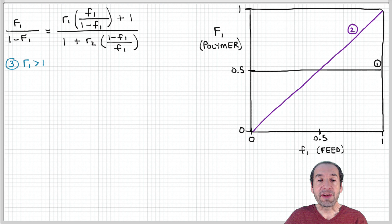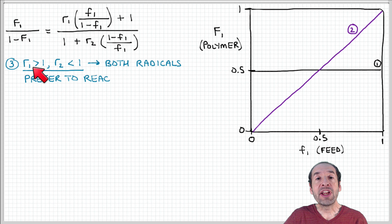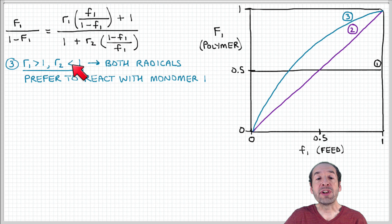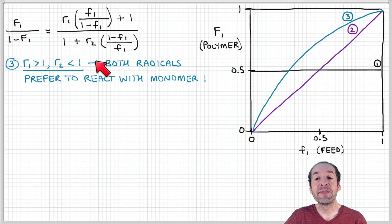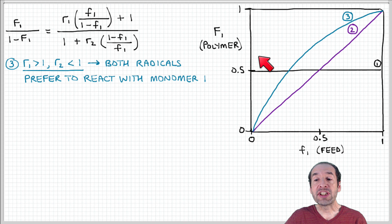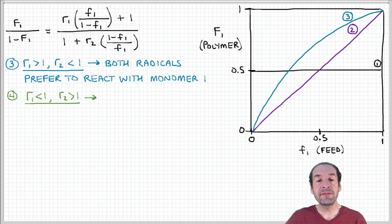We can also consider a case where R1 is greater than 1 and R2 is less than 1, meaning there is a preference in both cases for monomer 1 to be added. A growing chain ending in monomer 1 prefers to add monomer 1, and a growing chain ending in monomer 2 also prefers to add monomer 1. So at a given feed composition, the copolymer will contain a greater fraction of monomer 1 because monomer 1 is preferred during the propagation step.